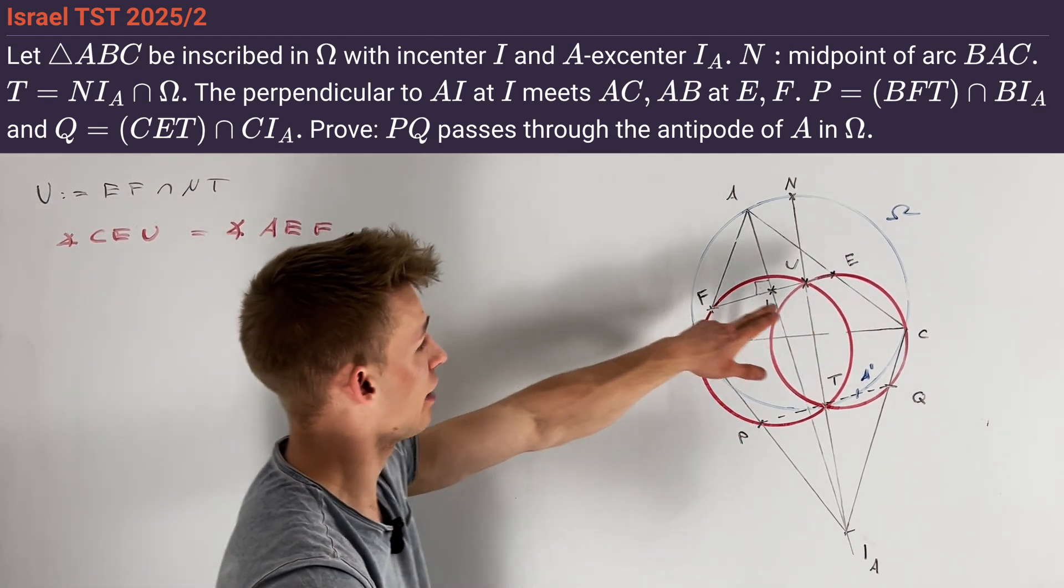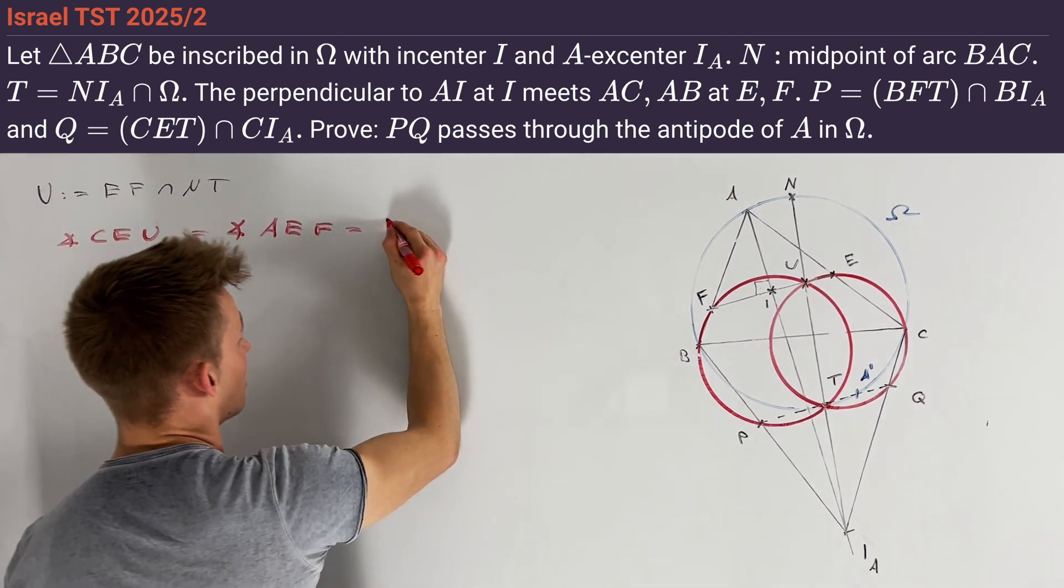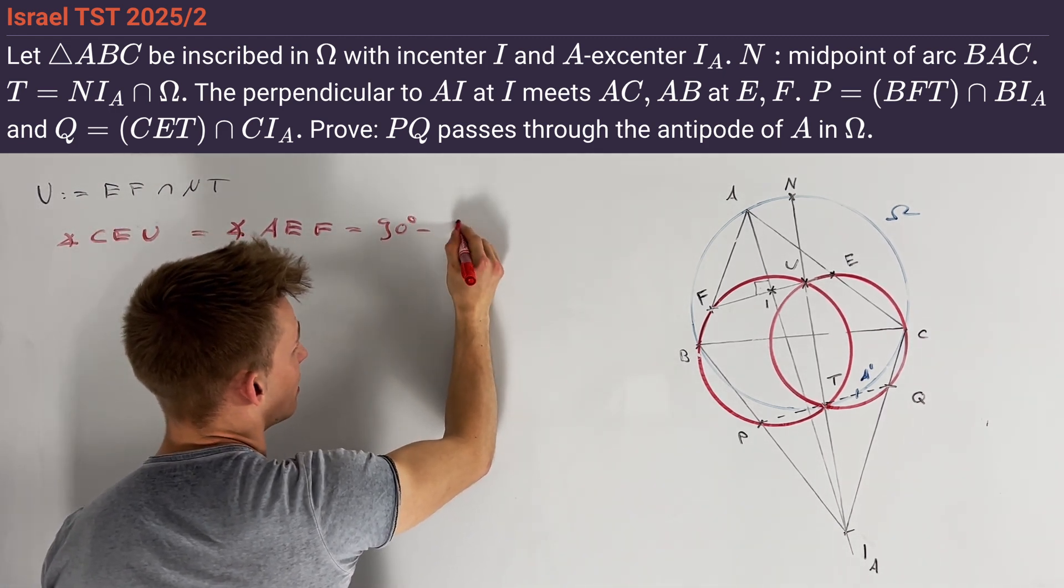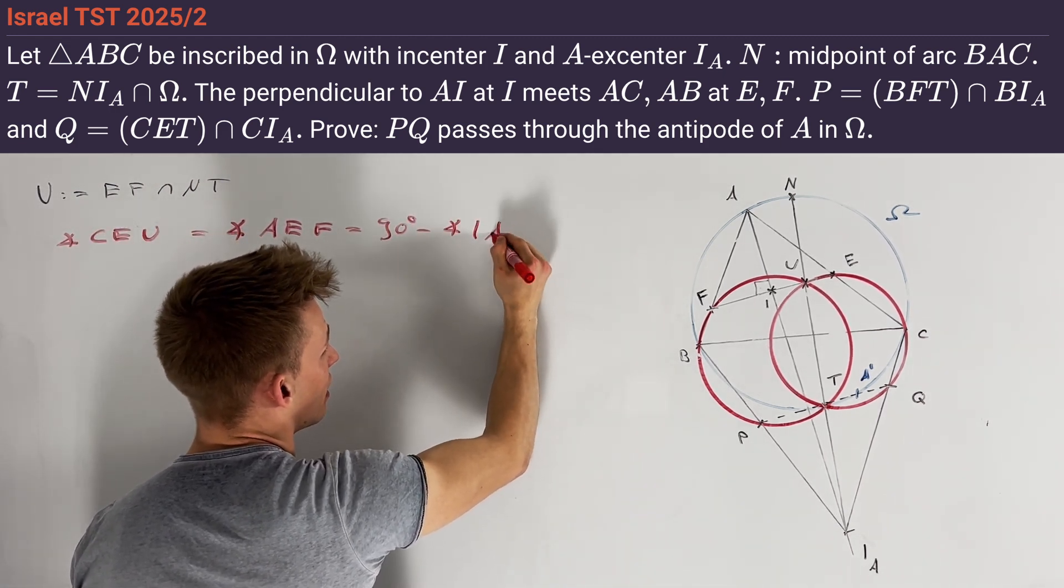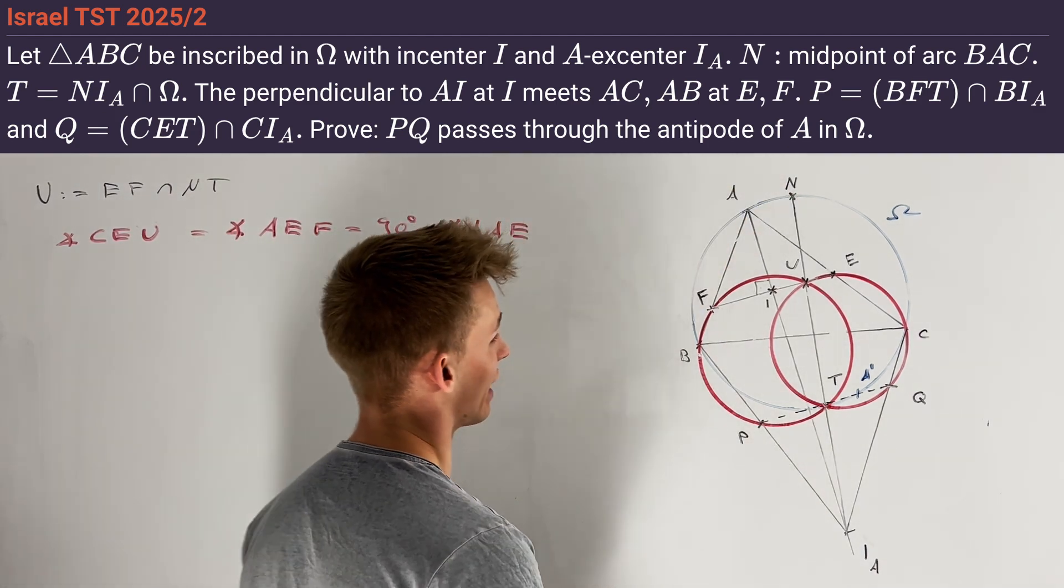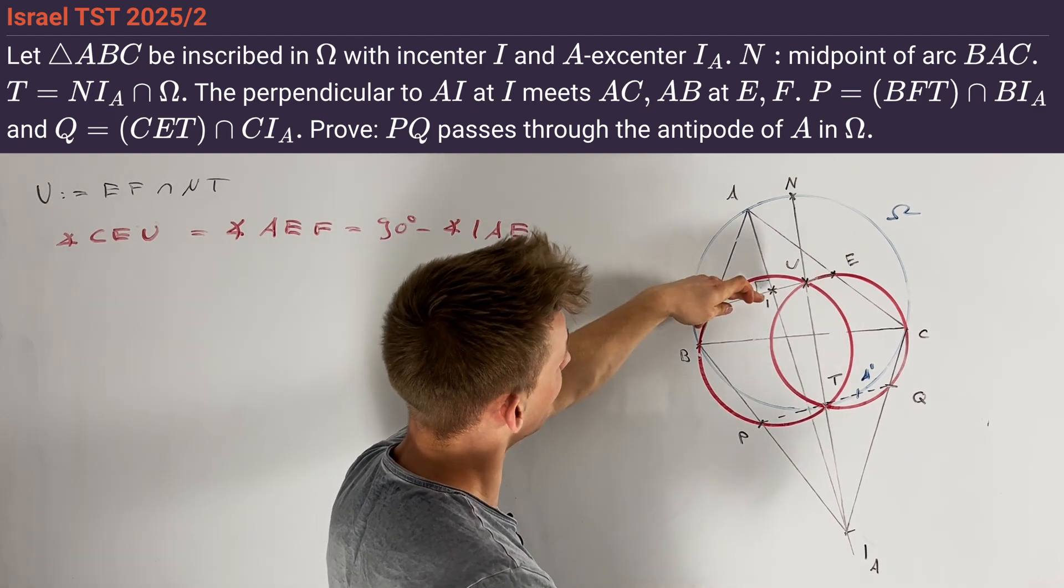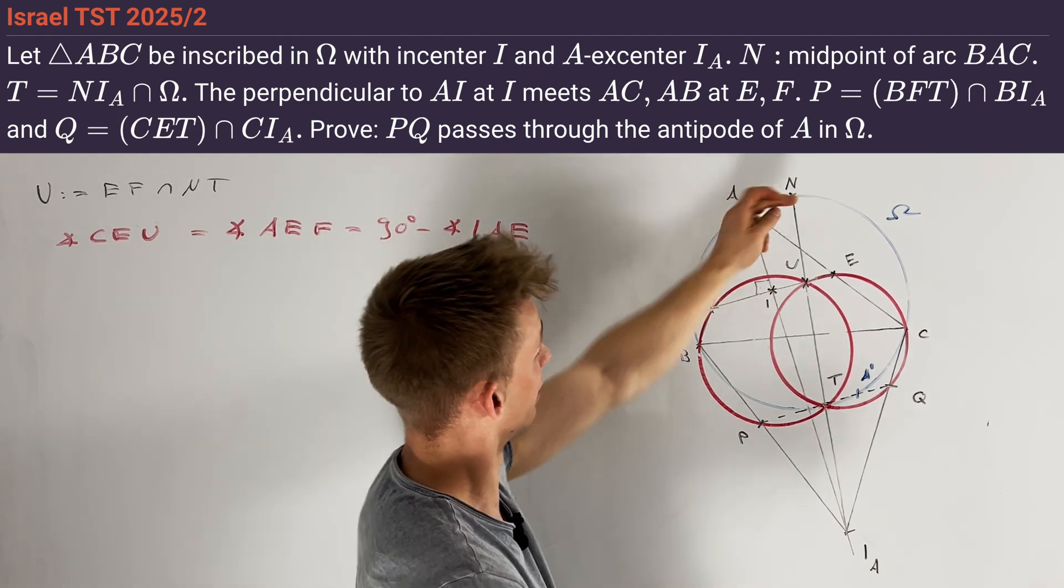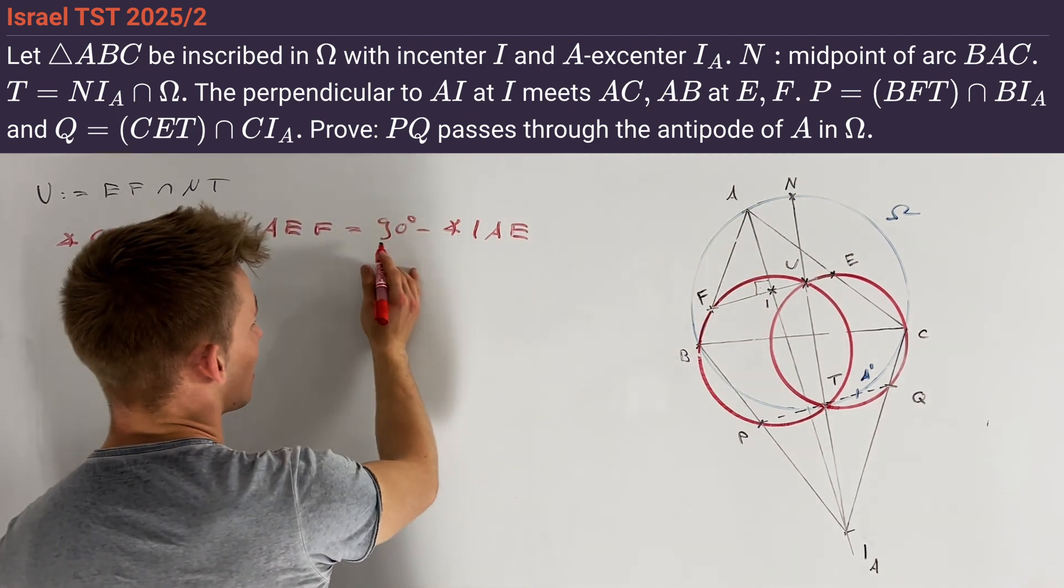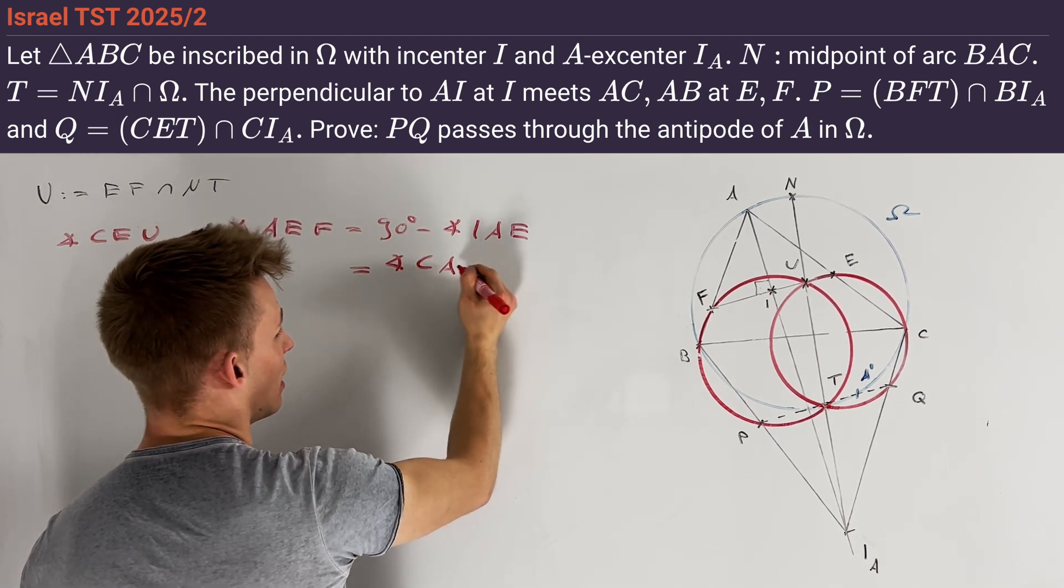Using the fact that EF is perpendicular to AI, we can write this as 90 degrees minus the angle IAE. We know that AN is the exterior angle bisector of the angle BAC, and therefore AI is perpendicular to AN. In other words, this angle is just equal to the angle CAN.